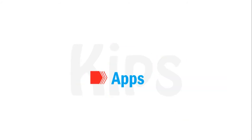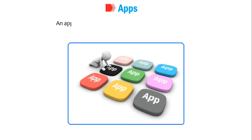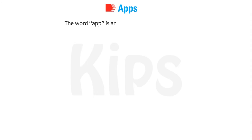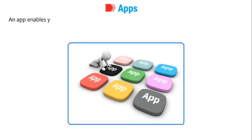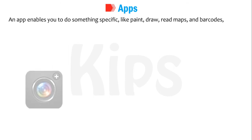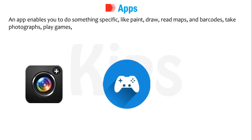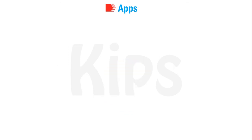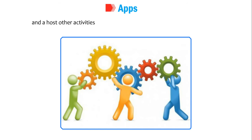First, let's start — what is an app? An application is a software designed to do a specific job. The word app is an abbreviation for application. An app enables you to do something specific, like you can paint, draw, read maps and barcodes, take photographs, play games, watch and edit videos and host other activities, but within the technical limitations of your device.